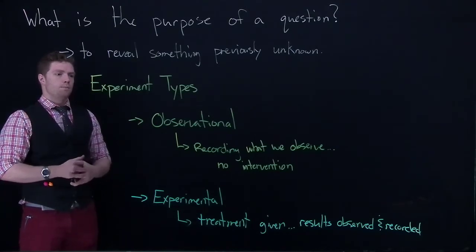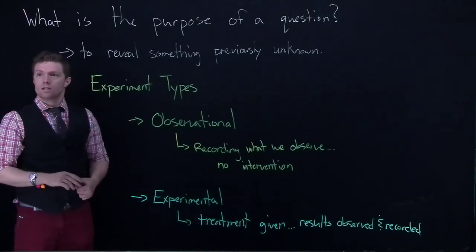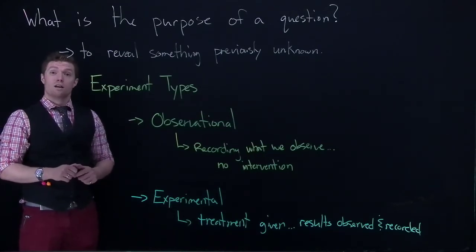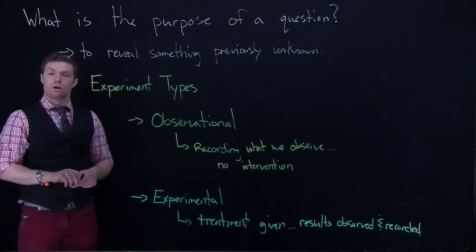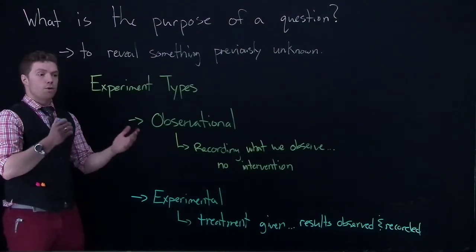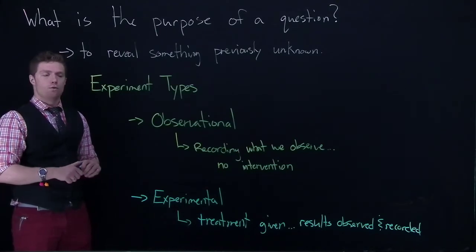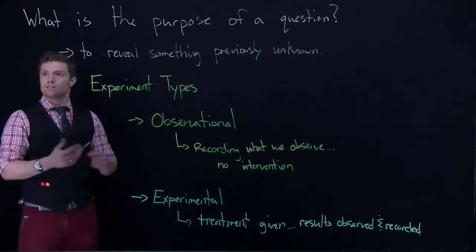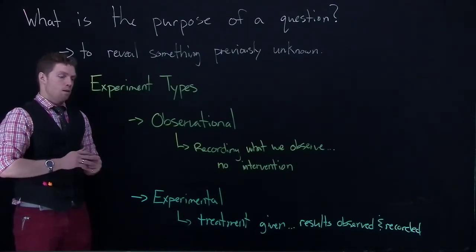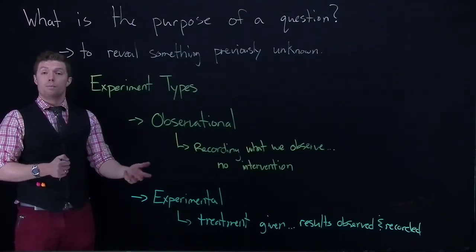The drawback of observational is it's really hard to determine cause and effect because we don't know from which direction are we observing it. There's a lot more unknowns. We don't know if it's something else that's maybe causing some birth defect among the fetus.